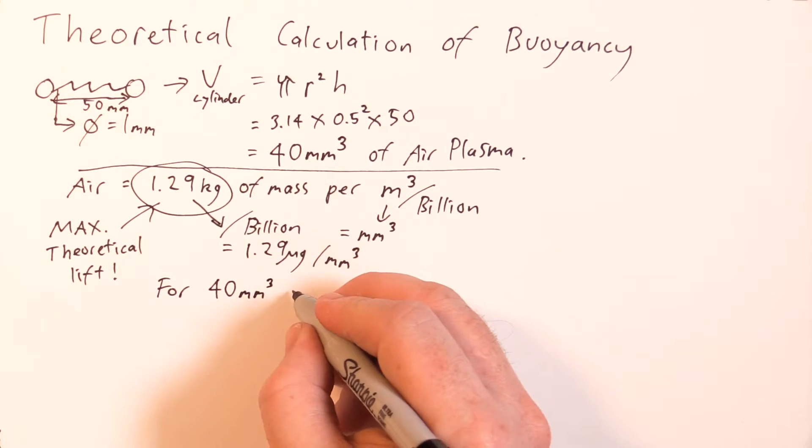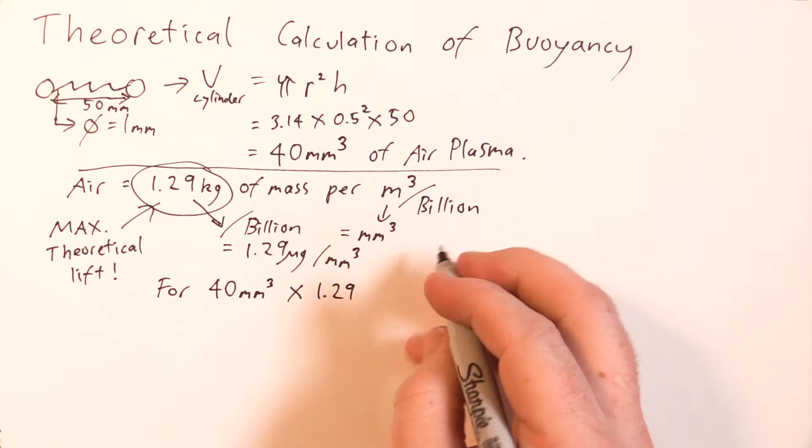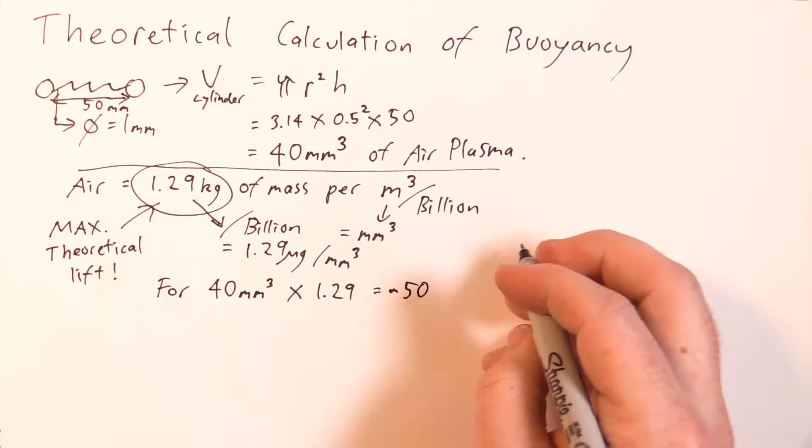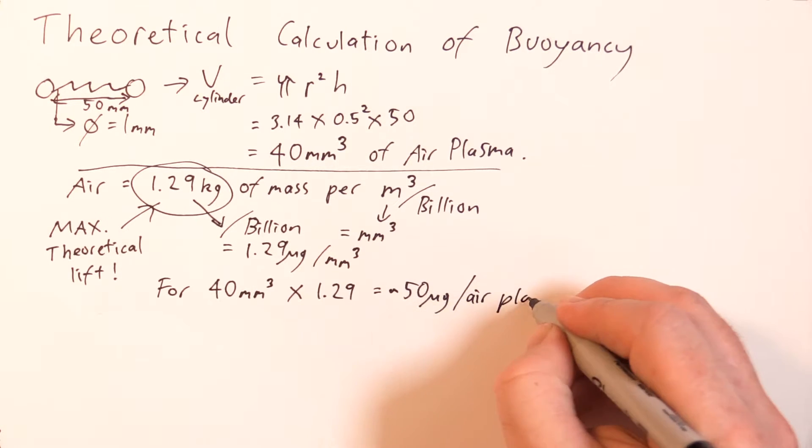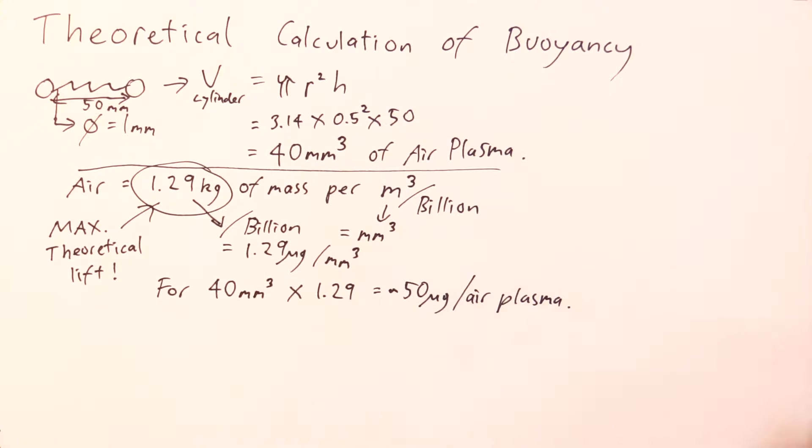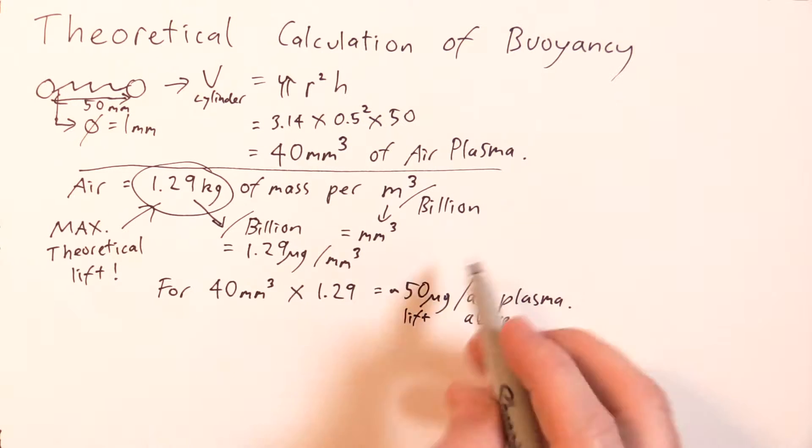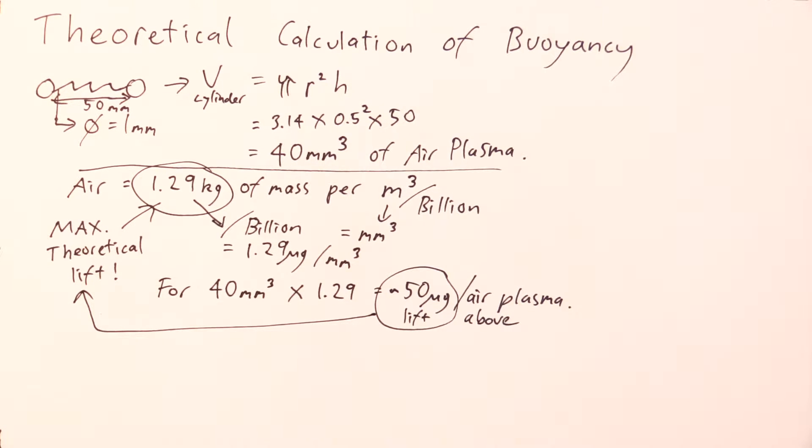In the first calculation there was an estimated 40 cubic millimeters of air plasma. So to work out the total lifting power of the air plasma we had, we multiply 40 by 1.29 and we end up with 50 micrograms of lift for the experiment. And again, remember this is the theoretical maximum lifting power.